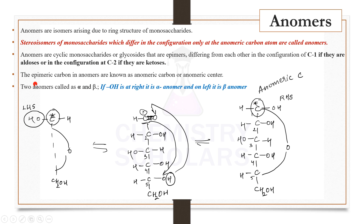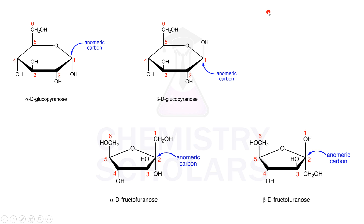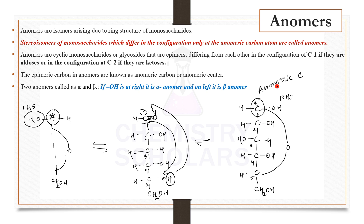Stereoisomers of monosaccharides which differ in configuration only at the anomeric carbon atom are called anomers. The structure differs only at the first (anomeric) carbon atom; the rest of the structure remains the same. All anomers are cyclic monosaccharides or glycosides; they are also epimers because they differ only at one carbon atom. If OH is on the right-hand side it is called the alpha anomer; if it is on the left-hand side it is called the beta anomer. The Haworth projection can be drawn as furanose or pyranose structures — for alpha, OH is written pointing down, and for beta, OH is written pointing up.